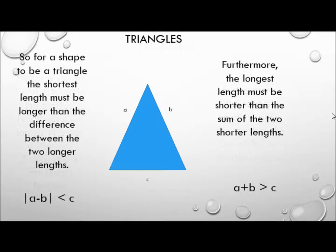Mathematically, we can say that the absolute value — that is to say the value ignoring the sign — of a minus b must be less than c, and that a plus b must be greater than c.